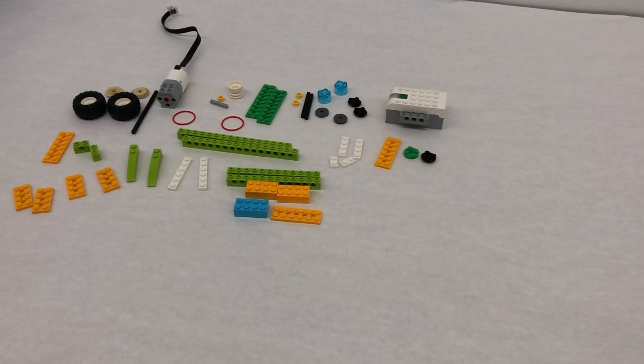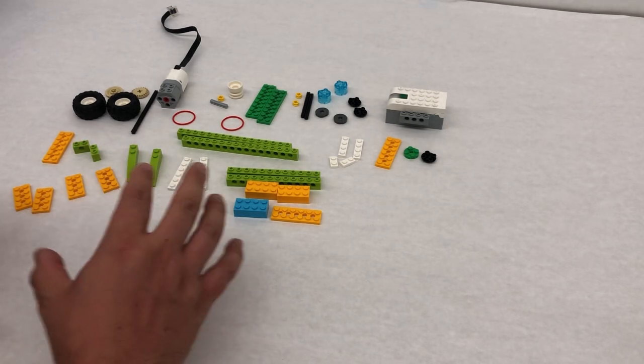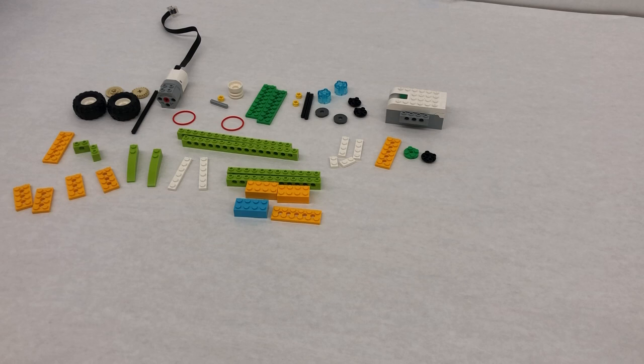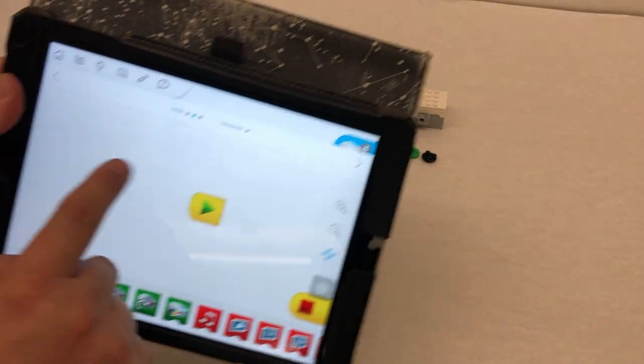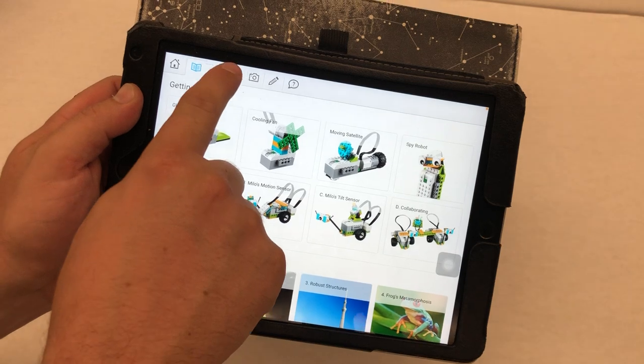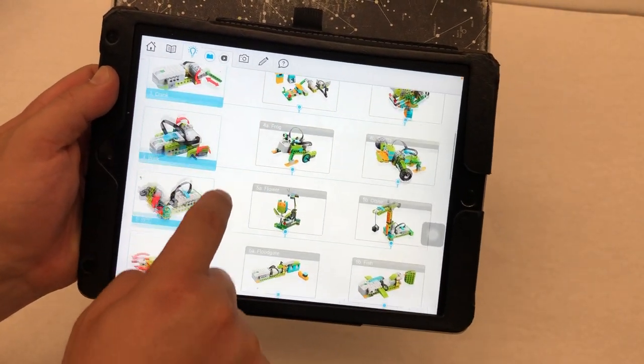All right this is a building tutorial for the Street Sweeper. There are no building instructions for the entire thing so I'm gonna just go ahead and start building. If you are interested, if you go on the WeDo app and you click on classroom projects and then you click on the light bulb you can see all these different ideas.